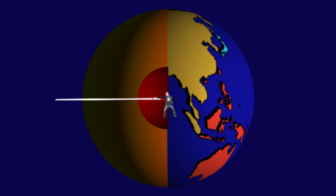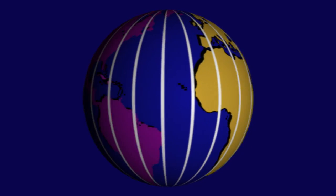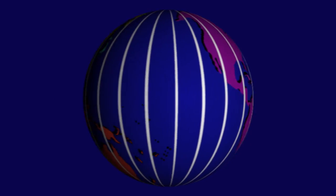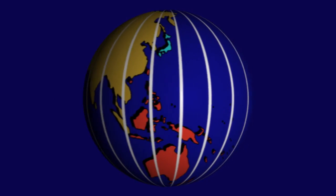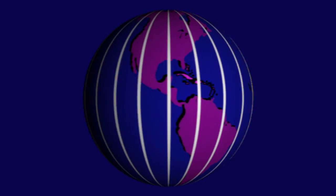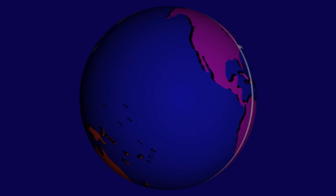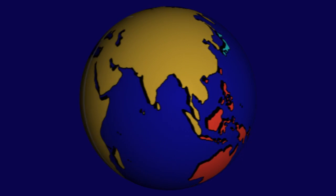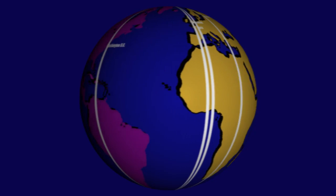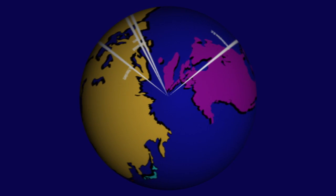Unlike latitude, which has the definite cardinal points and line of the poles and the equator to measure relative to, longitude has no such cardinal points. We arbitrarily have to agree as a human society where to put this cardinal line, and historically it has been all over the globe — through St. Petersburg, through Paris, through Washington DC — but finally settling upon a line that goes through Greenwich, England.